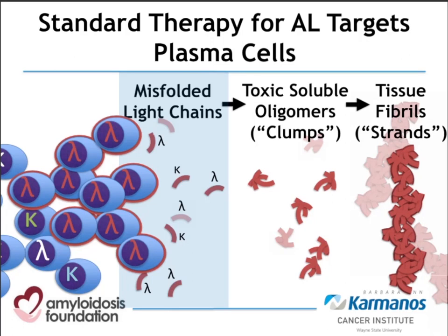These misfolded light chains first start forming clumps that are still soluble in the blood. These misfolded light chains and the toxic clumps — the medical term is oligomer — are actually toxic to organs. There is evidence showing that contraction of heart muscle is affected by these light chains, and that certain cells in the kidneys called mesangial cells are injured by them. They continue to clump up and eventually form strands that are deposited in the tissues of organs, causing mechanical interference and damage. The symptoms a person has depends on which organs are affected.